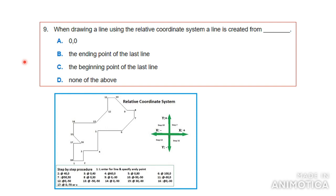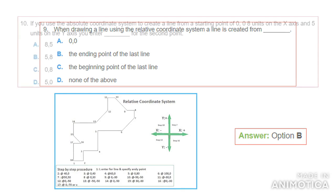Number nine: when drawing a line using the relative coordinate system, a line is created from — A) 0,0, B) the endpoint of the last line, C) the beginning point of the last line, or D) none of the above. The answer is B — from the endpoint of the last line. So if you draw one line and then begin to draw another, it starts from where the previous line ended.